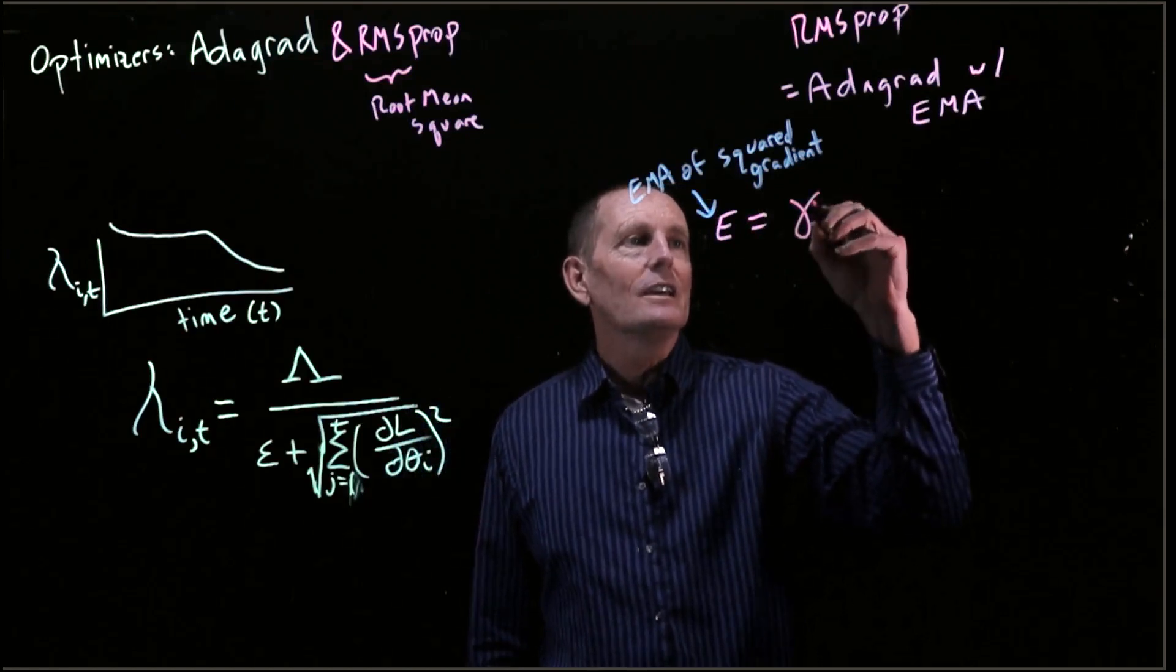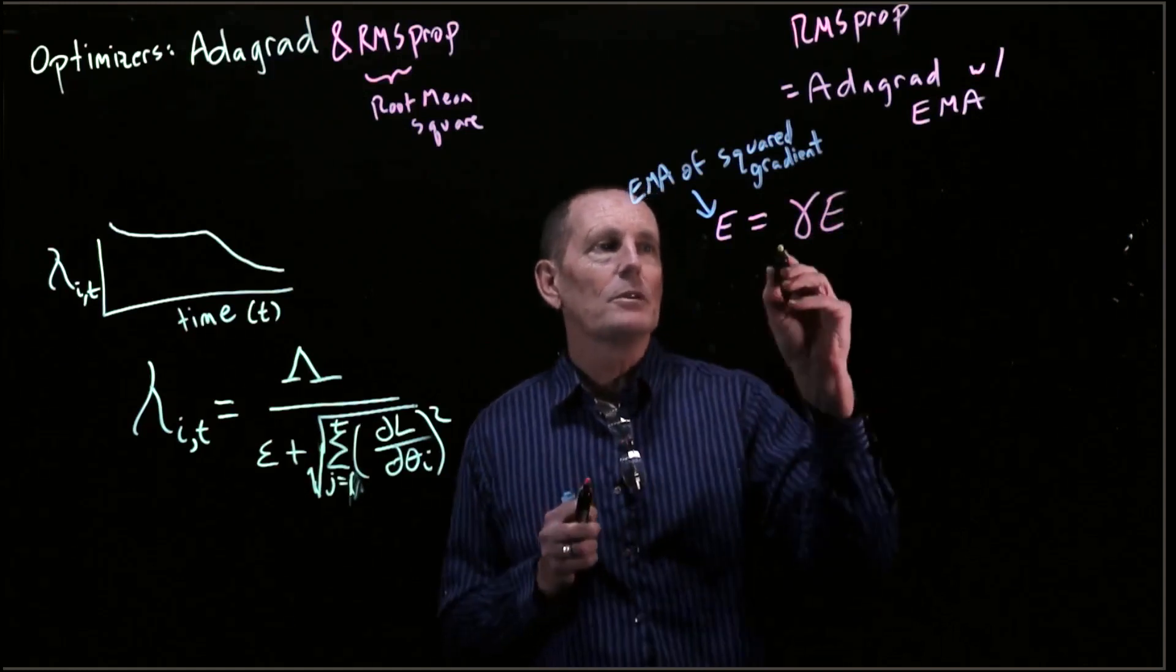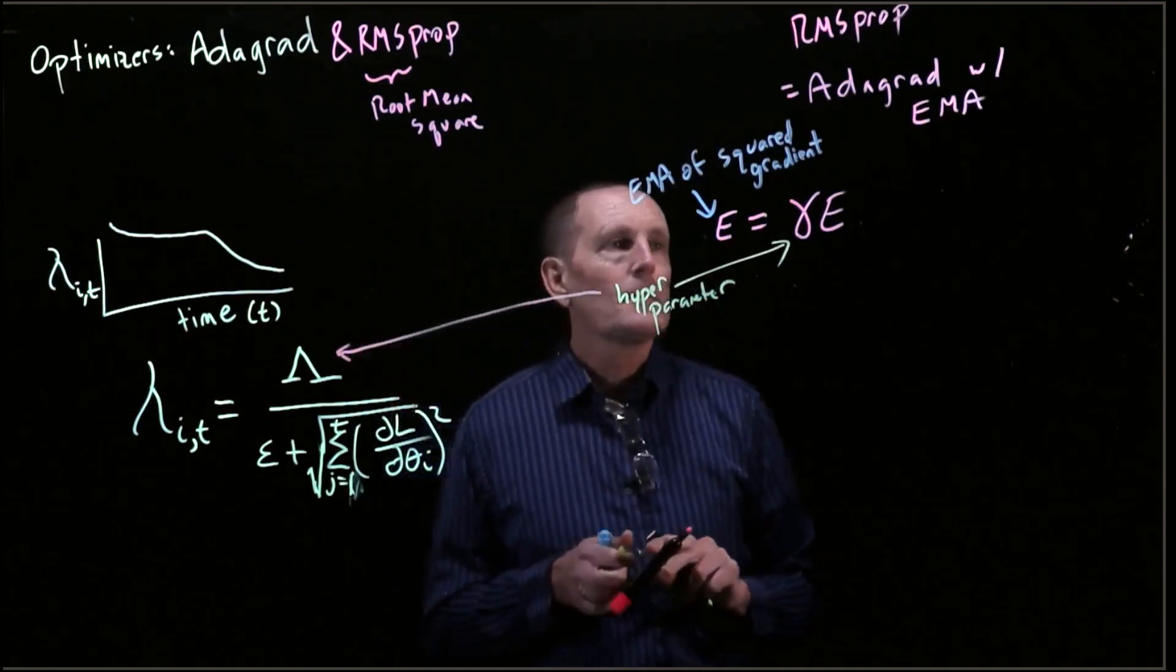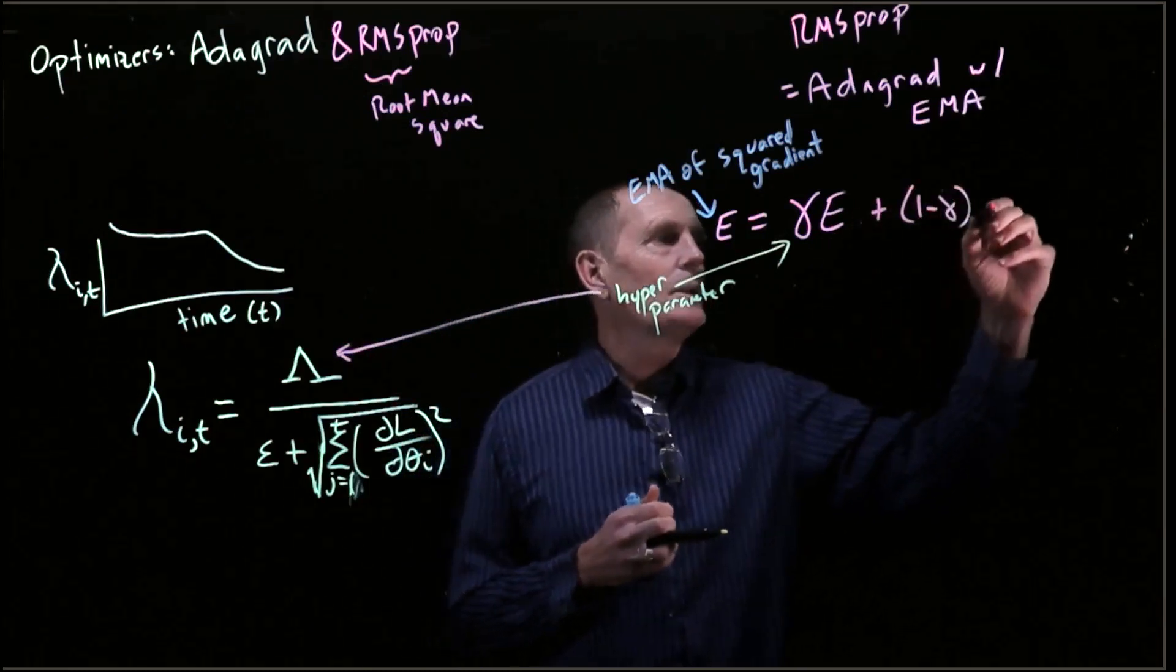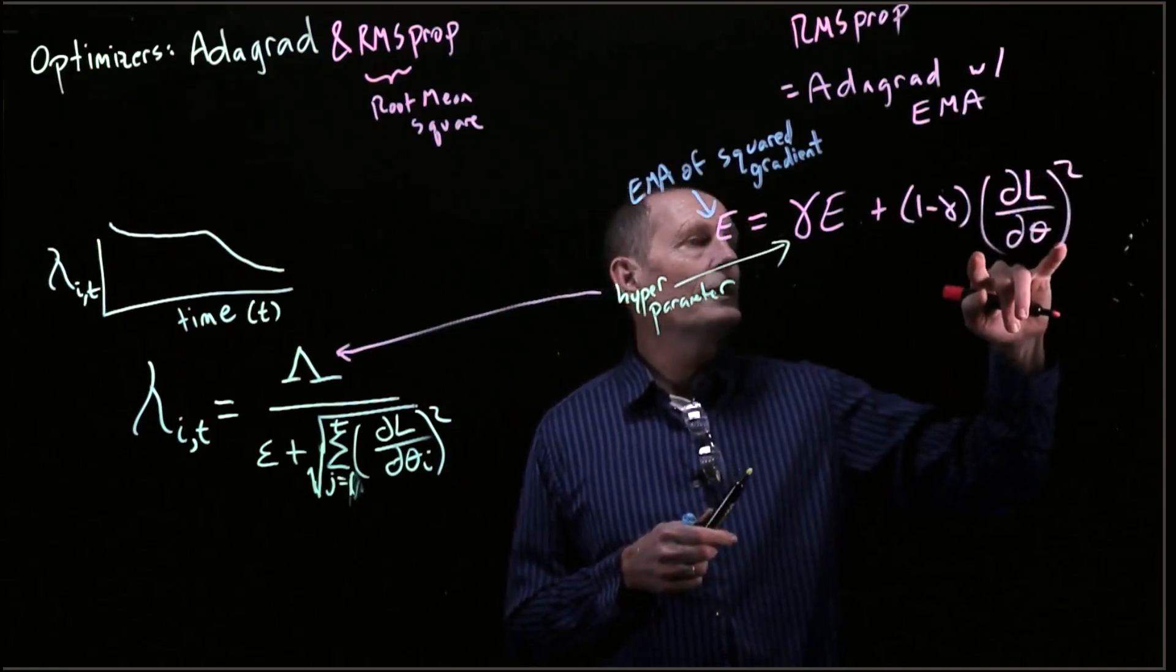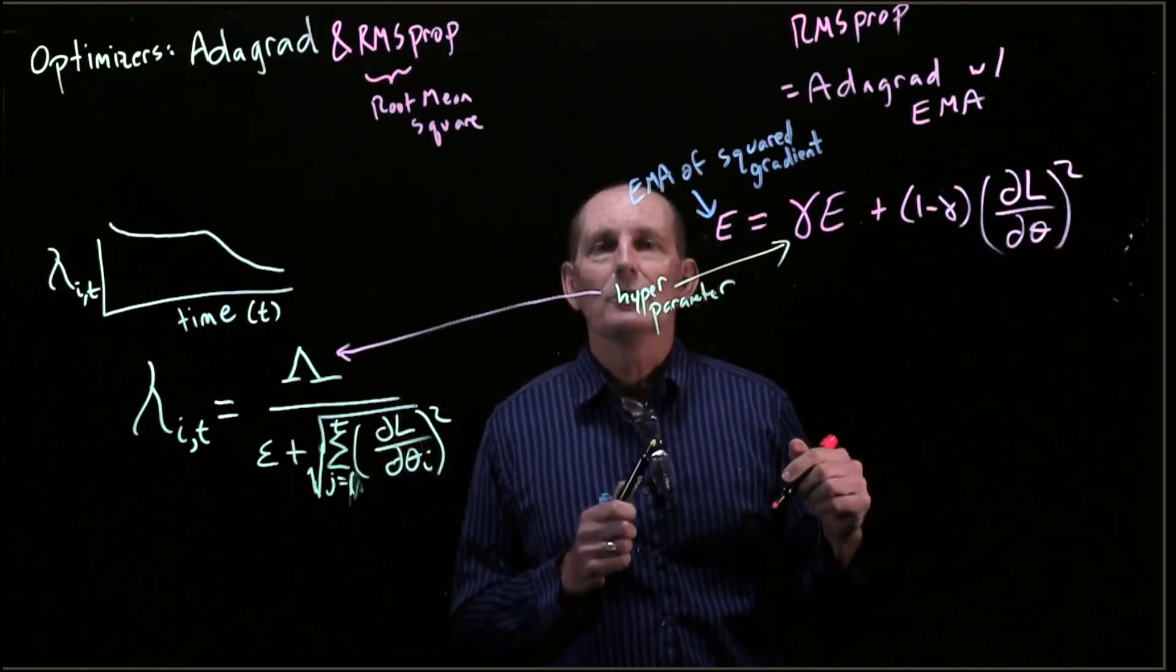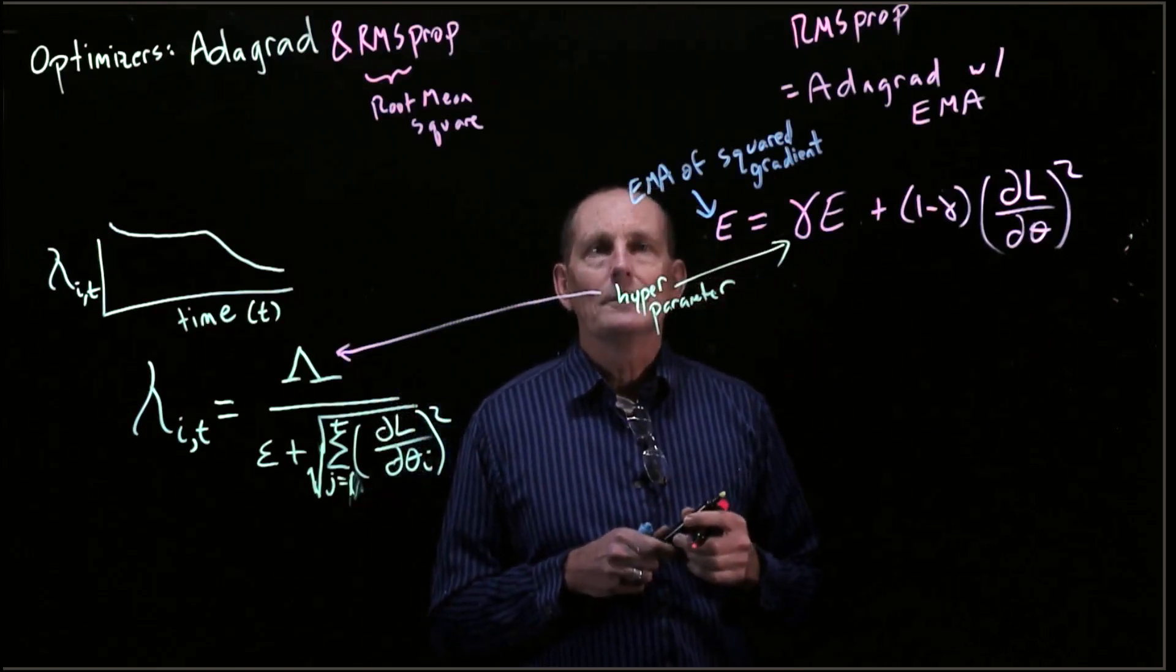So e is going to be that exponential moving average. We're going to use some gamma times e. Gamma, of course, is another hyperparameter. As is capital lambda. And then this is going to be plus 1 minus gamma times the squared gradient. Note that the gradient is a vector again. It's length is the number of parameters that we have. So e is such a vector as well.